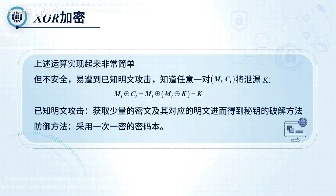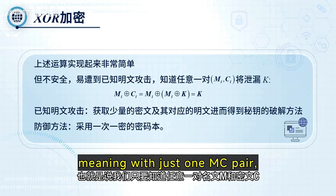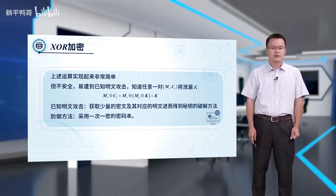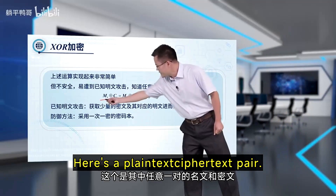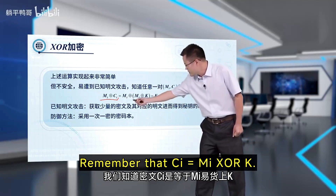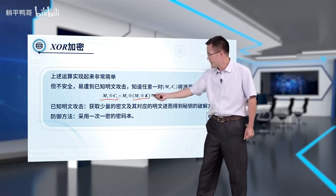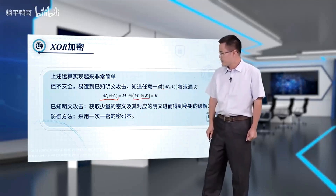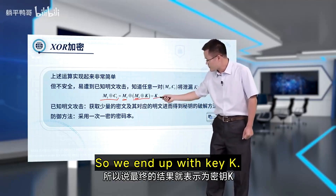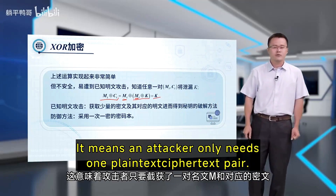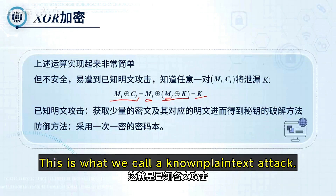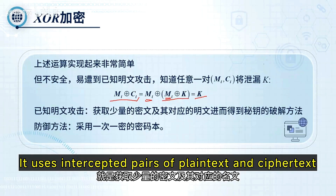XOR is simple to implement but not secure. It's vulnerable to a known-plaintext attack, meaning with just one plaintext-ciphertext pair we can find the key K. Here's how: given a plaintext-ciphertext pair, we XOR the plaintext with its ciphertext. Based on XOR properties, XORing identical values gives us 0, so we end up with key K. This means an attacker only needs one plaintext-ciphertext pair to derive the encryption key. This is what we call a known-plaintext attack — it uses intercepted pairs of plaintext and ciphertext to recover the encryption key.